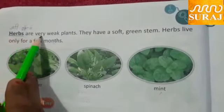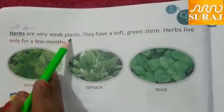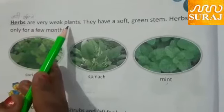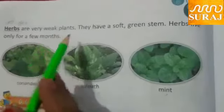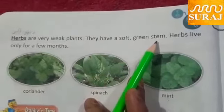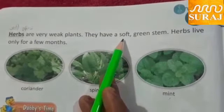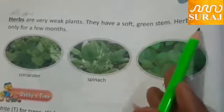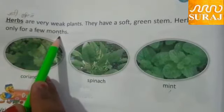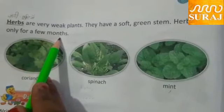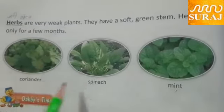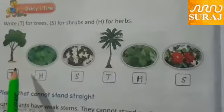Herbs are very weak plants. They have a soft green stem. Herbs live only for a few months. For example, coriander, spinach and mint.